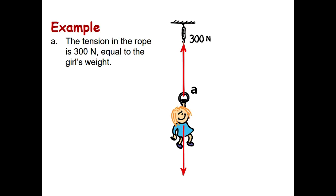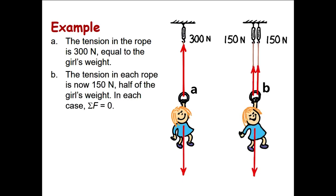Take another example: a girl hanging from a rope. The tension in the rope reads 300 Newton, which equals her weight. The girl is hanging at rest, and the net force is zero — this is equilibrium. Now, if she hangs from two ropes, the tension in each rope is half her weight: 150 Newton. Adding all forces, they cancel out, and the net force remains zero.